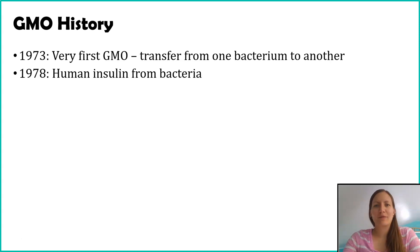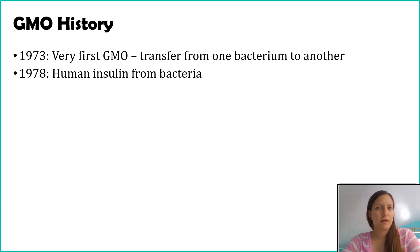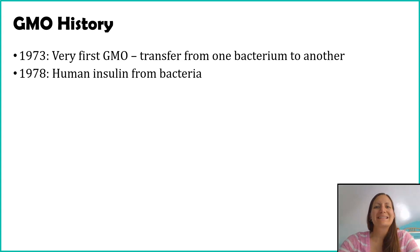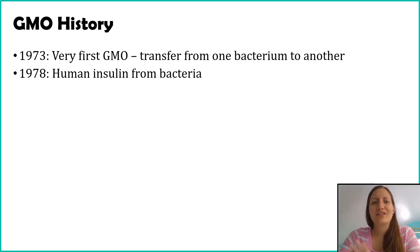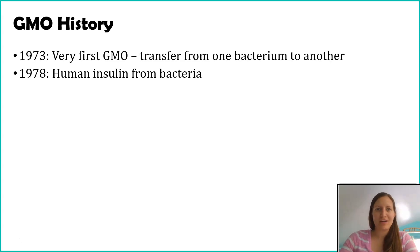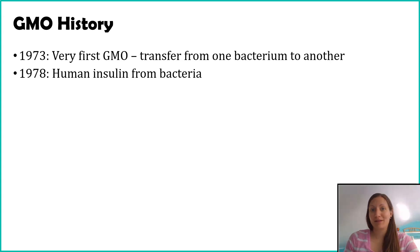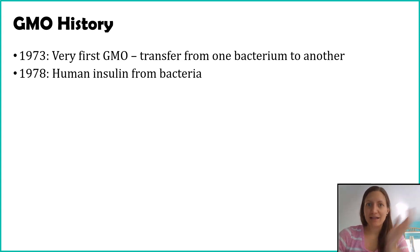What scientists were able to do was take those instructions from human cells that say here's how you make insulin and inject it into bacteria. Because our DNA is all the same language — A's, T's, G's, and C's — bacteria is able to read it. Bacteria make insulin, then we isolate the insulin and that's what people are getting injections of. They're injecting themselves with human insulin that bacteria made, but it's still the same insulin. This was one of the very first groundbreaking impacts of this GMO technology.